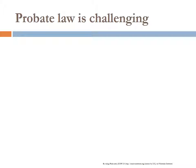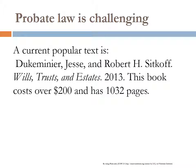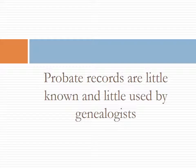One of the most common issues in using probate law is that it is very challenging. For example, if you were starting law school right now, the current popular text for wills, trusts, and estates is a book by Duke, Minor, and Sitkoff. This book costs over two hundred dollars and has over a thousand pages. My own text for trusts and estates had close to a thousand pages — that's really just an introductory book on the subject. In addition, probate records are little known and little used by genealogists. In this case it is correct, because probate records, because of their complexity, are not usually consulted.